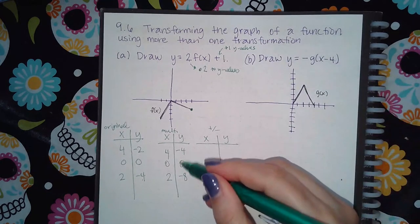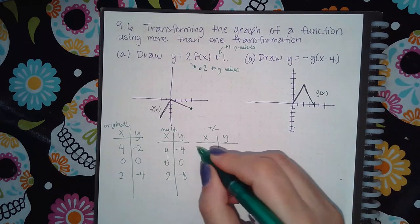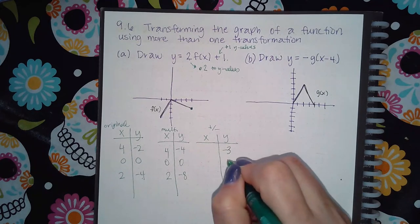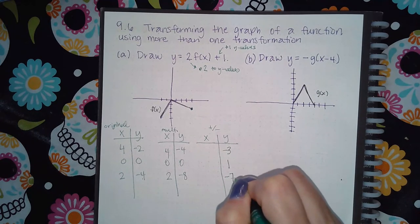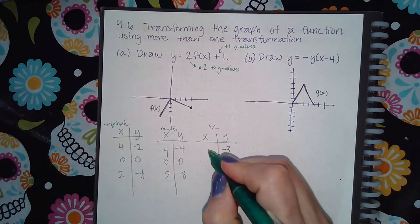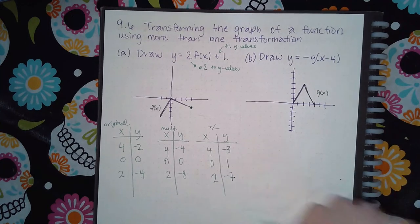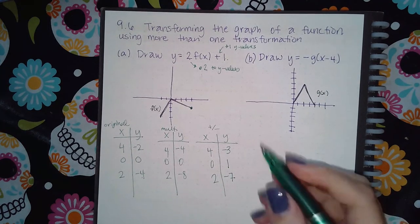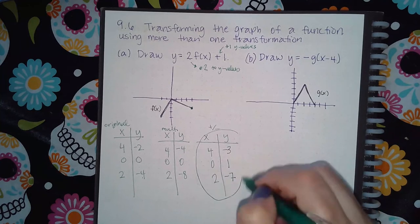So then I'm going to take each one of these y values and I'm going to add one, which means that negative three, one, and negative seven. But nothing is happening on the inside, so the x values will stay exactly the same. And then you just plot these ending results.